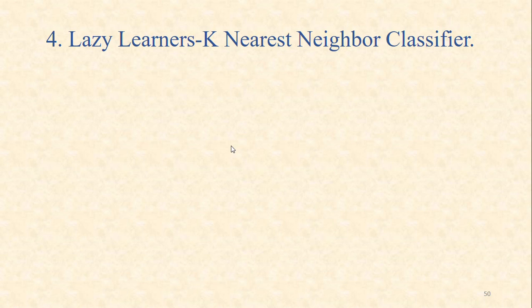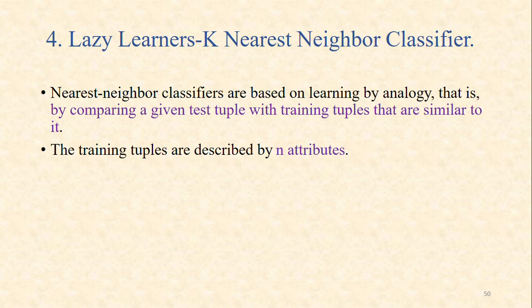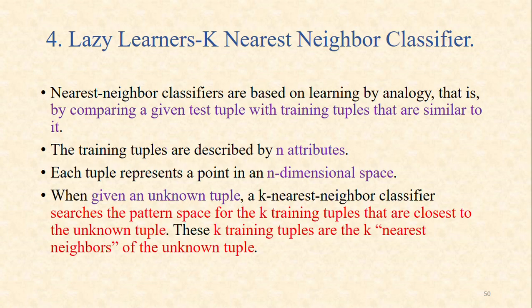In this video, we learn the lazy learners or k-nearest neighbor classifier. Nearest neighbor classifiers are based on learning by analogy — that is, by comparing a given test tuple with training tuples that are similar to it. The training tuples are described by n attributes, and each tuple represents a point in an n-dimensional space. When given an unknown tuple, a k-nearest neighbor classifier searches the pattern space for the k training tuples that are closest to the unknown tuple. These k training tuples are the k-nearest neighbors of the unknown tuple.